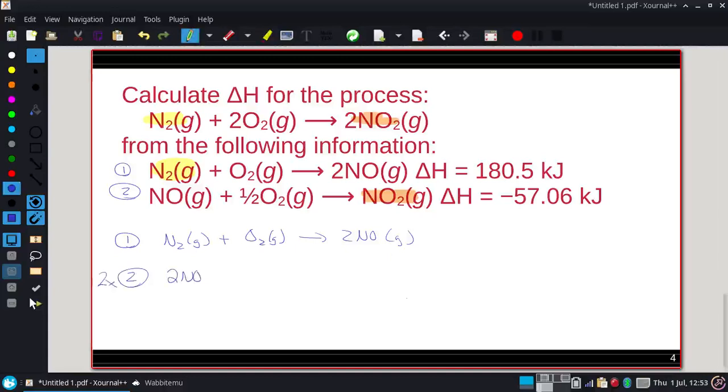So what I'm going to do is I'm going to take equation 2 and multiply everything by 2. So it'll be two NOs. That'll make that one oxygen rather than a half, and then we get two NO2s. All right, but this works out great because the two NOs would actually cancel. We actually combine these equations, and we're going to end up with the N2, two oxygens, and the two NO2s, just like the overall process.